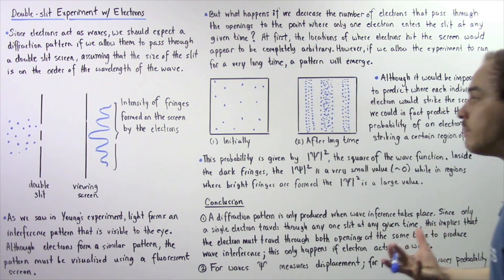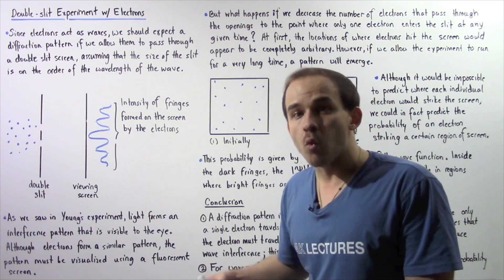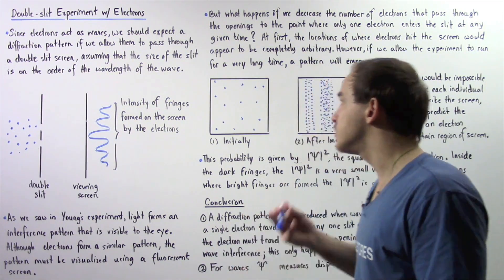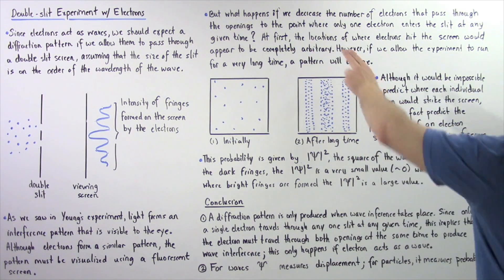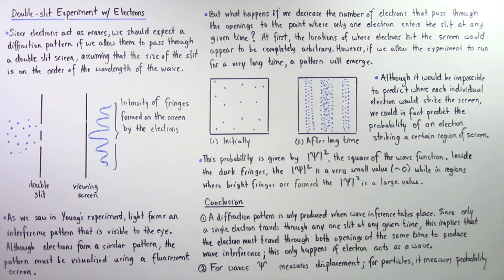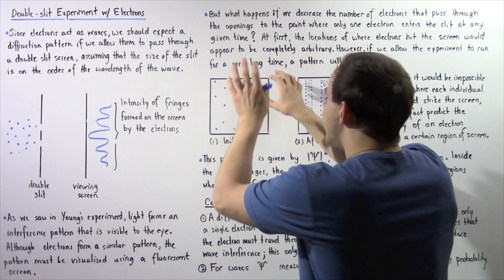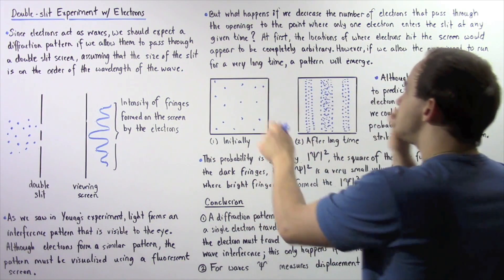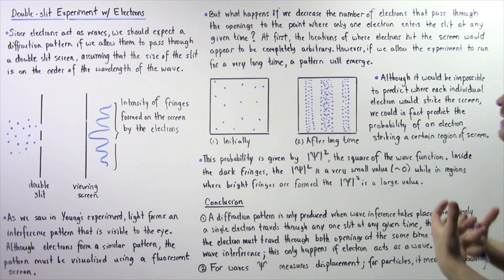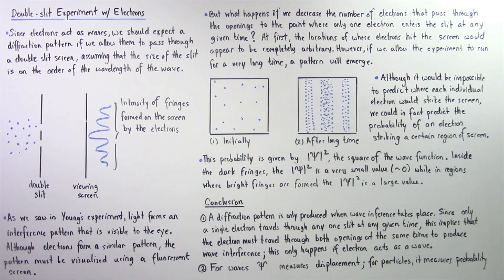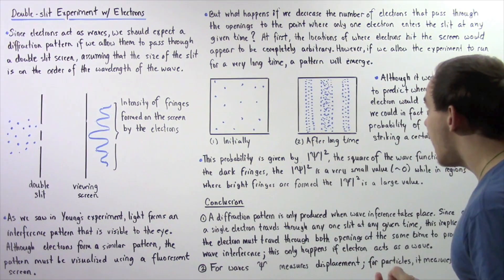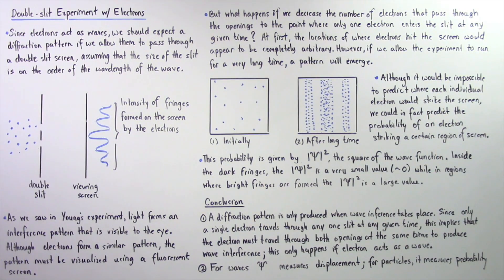What happens if we decrease the number of electrons passing through the two openings to the point where only one electron enters any one of the two openings at any given moment? What type of diffraction pattern would we observe — would we observe a diffraction pattern at all? Initially, the locations where electrons hit the screen would appear completely random, as shown in diagram 1, with no diffraction pattern apparent. However, if we allow the experiment to run for a very long time, a diffraction pattern will in fact emerge, as shown in diagram 2.